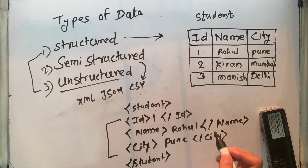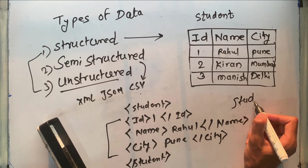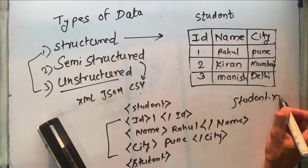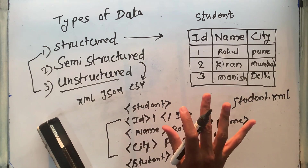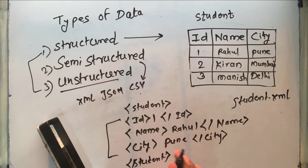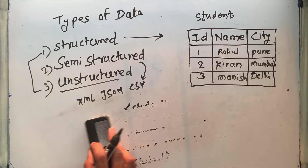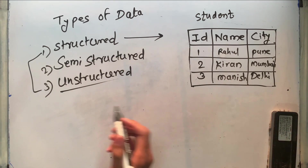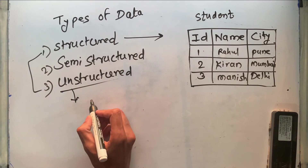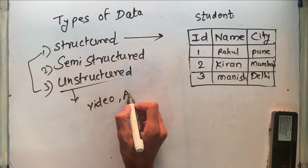This information is stored in a student.xml file, and that file can be stored in a database as well. Such type of data we can call semi-structured data. The third type is unstructured data.